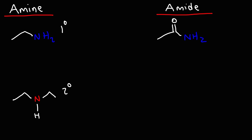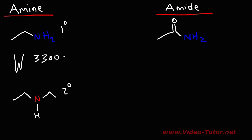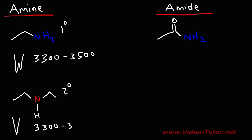Let's talk about primary and secondary amines before we go into amides. The primary amine, which has two hydrogen atoms attached to the nitrogen atom, will show up as a double peak with a signal somewhere between 3,300 and 3,500. The secondary amine only has one hydrogen atom, so it's going to have a single peak between 3,300 and 3,500. That's how you distinguish a primary amine from a secondary amine.